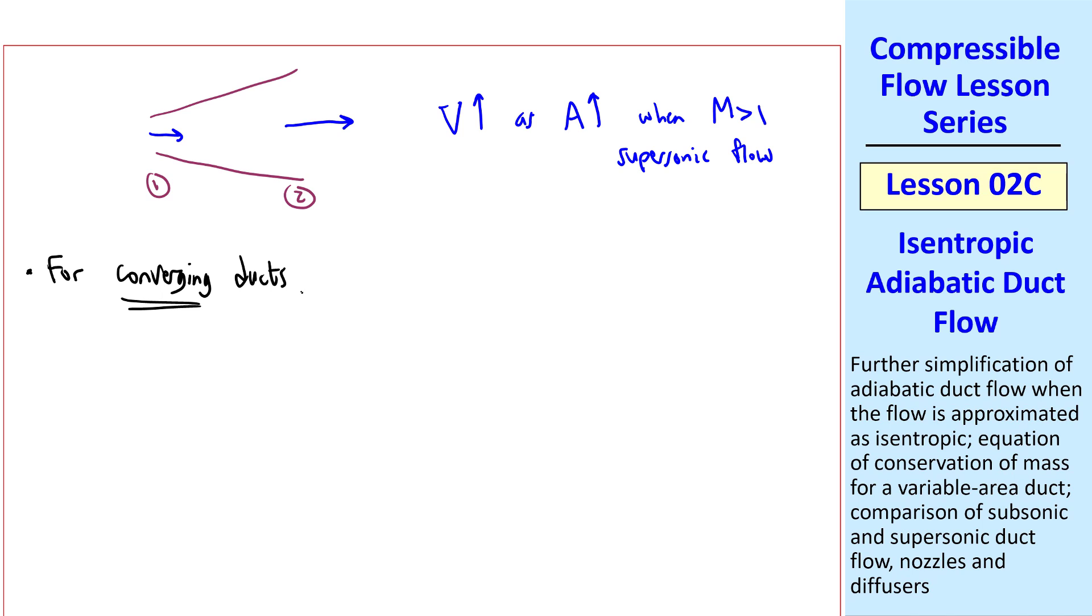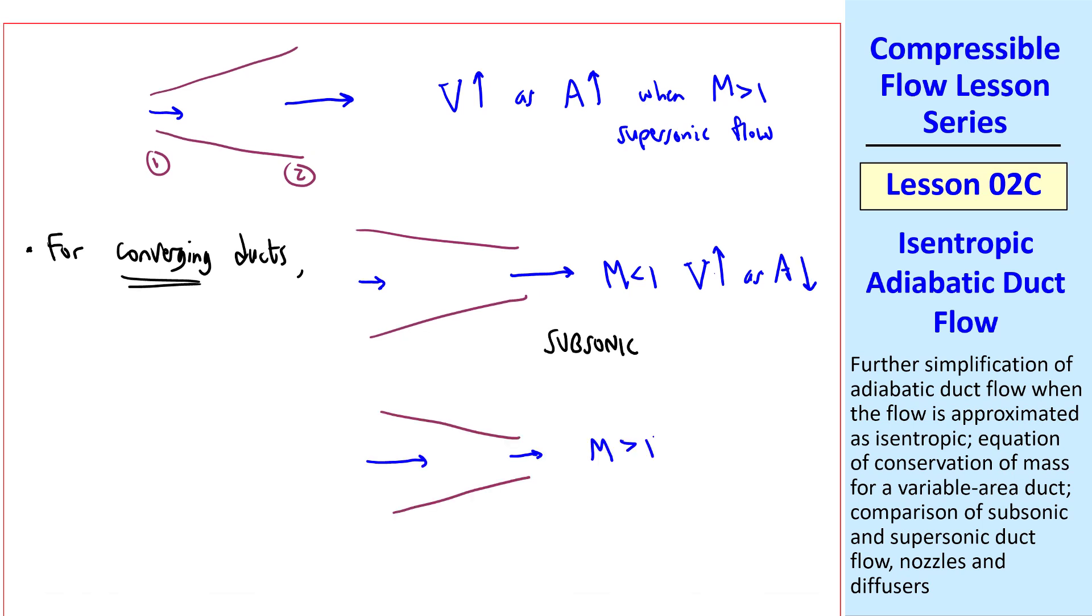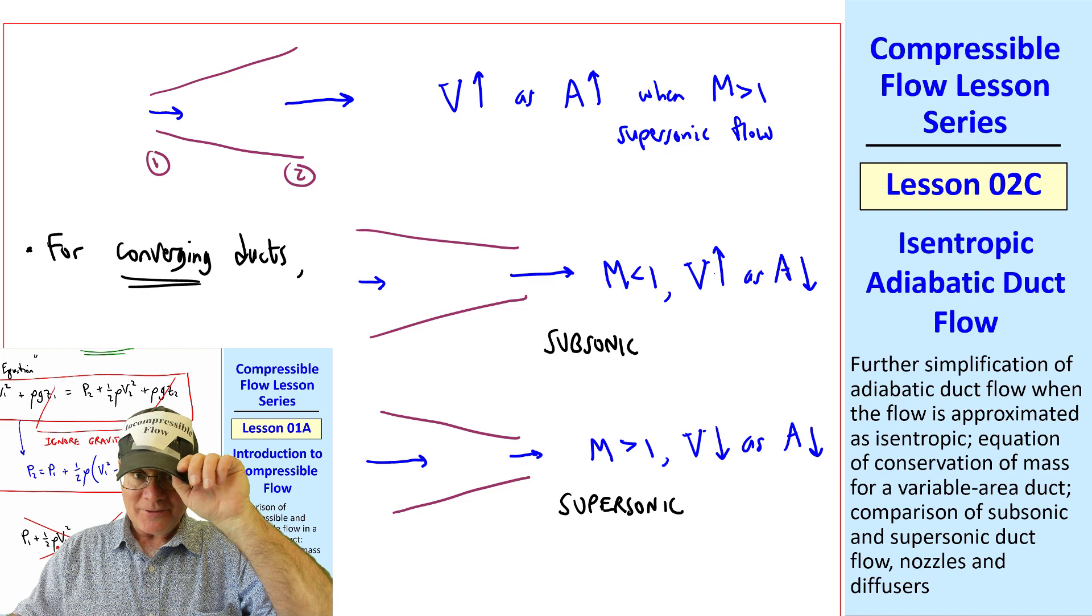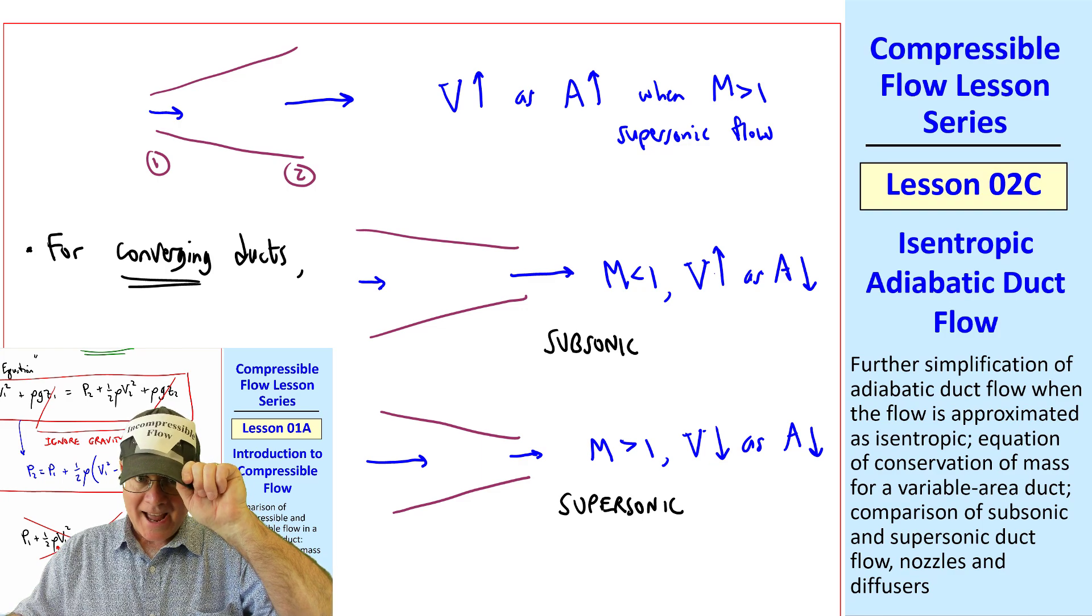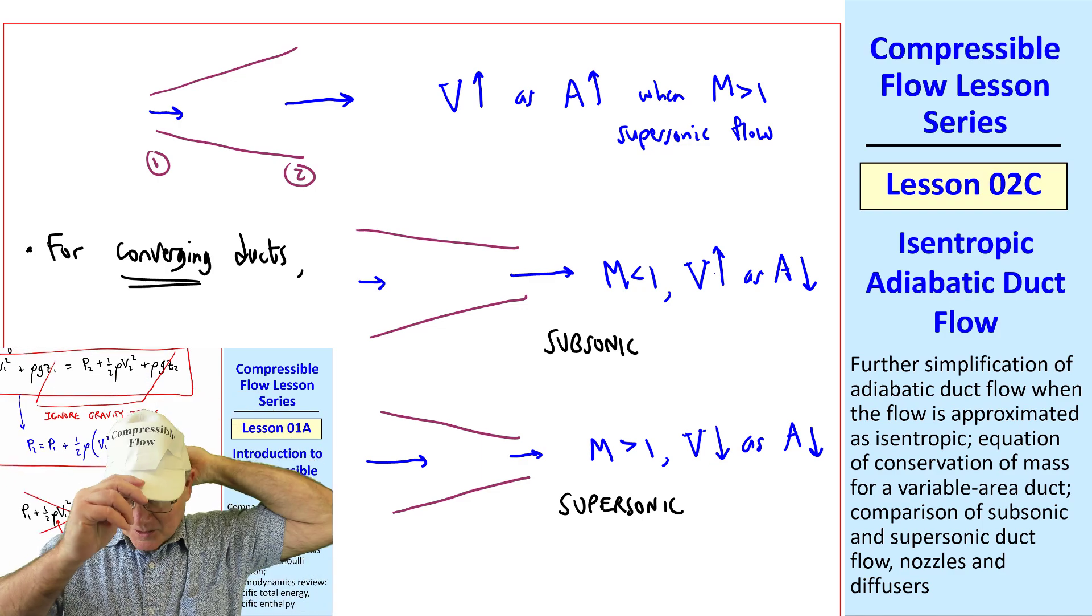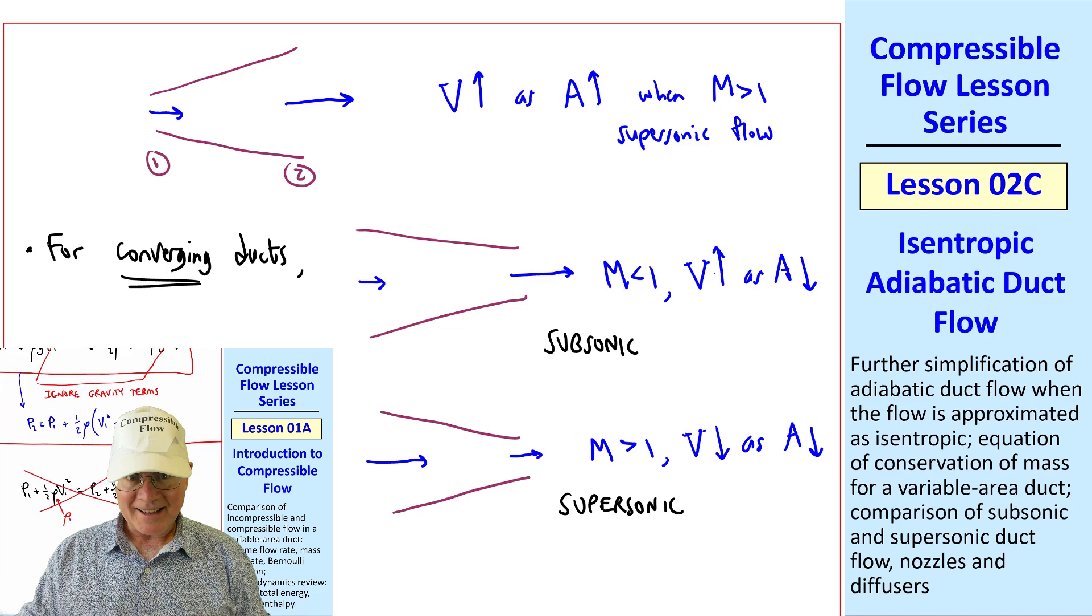For converging ducts, everything is opposite. Namely, for M less than 1 subsonic, V goes up as A goes down, which agrees with our intuition when the flow is subsonic. But when Mach number is greater than 1, V goes down as A goes down. This is the case for supersonic flow, and is opposite to what we're used to. As I said in the first lesson, you have to take off your incompressible flow hat and put on your compressible flow hat to understand why this is happening.